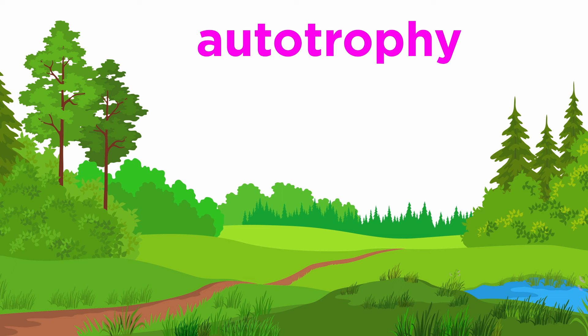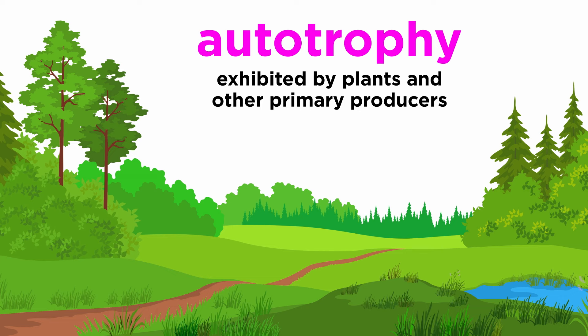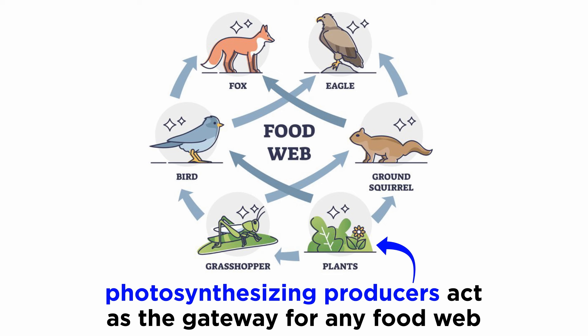First, let's examine autotrophy. Producers are autotrophs, or self-feeding organisms. Primary producers are usually plants and other photosynthesizers, which serve as a gateway for energy to enter food webs, or networks of organisms that eat each other. In almost all ecosystems, photosynthesizers are the only such gateway.